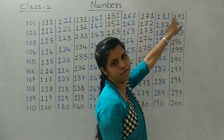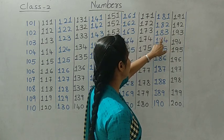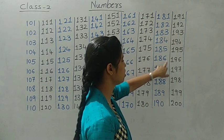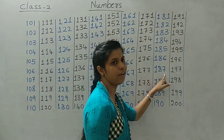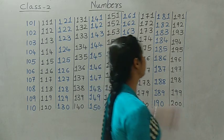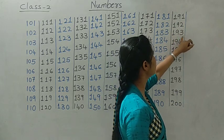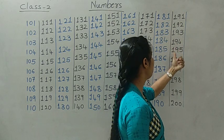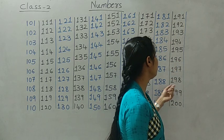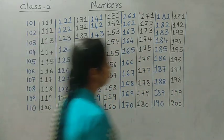Next: 181, 182, 183, 184, 185, 186, 187, 188, 189, 190, 191, 192, 193, 194, 195, 196, 197, 198, 199, 200. Write down the homework.